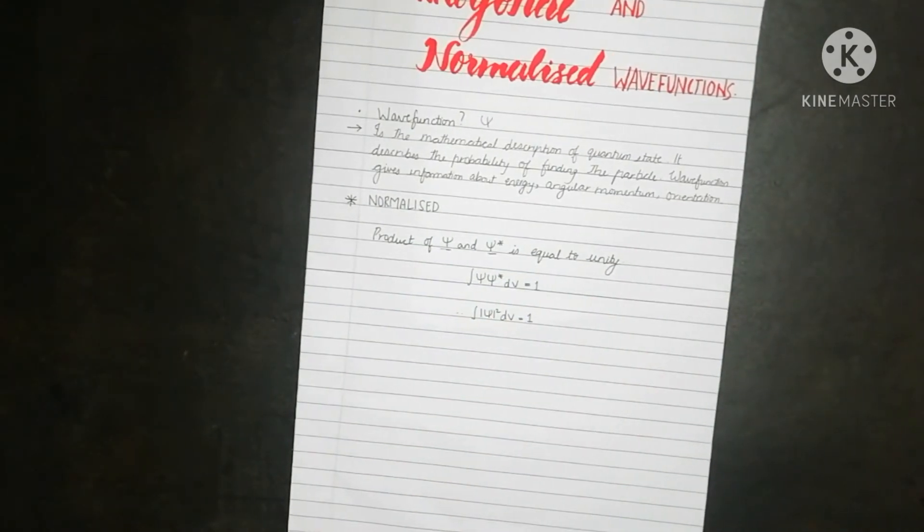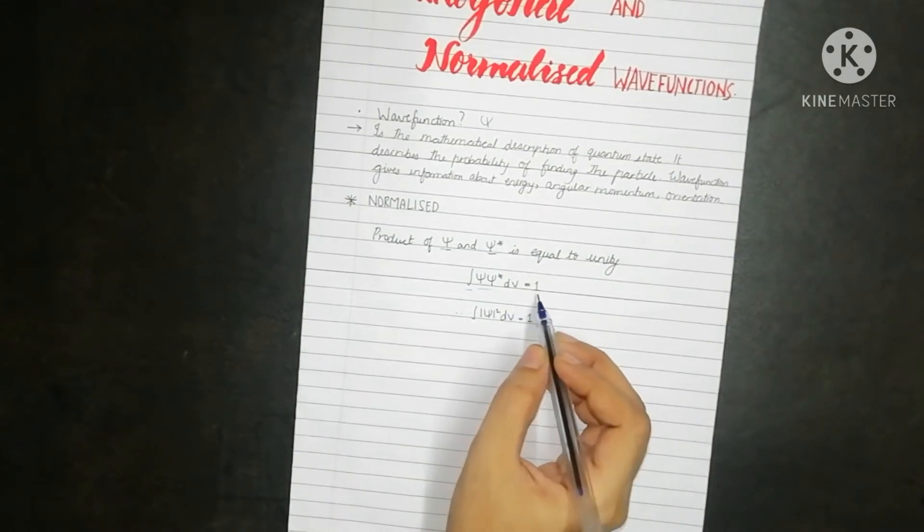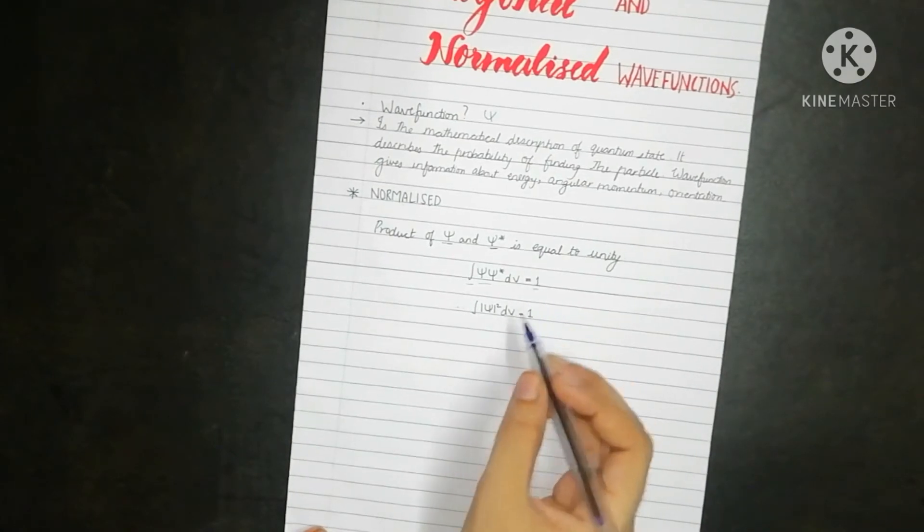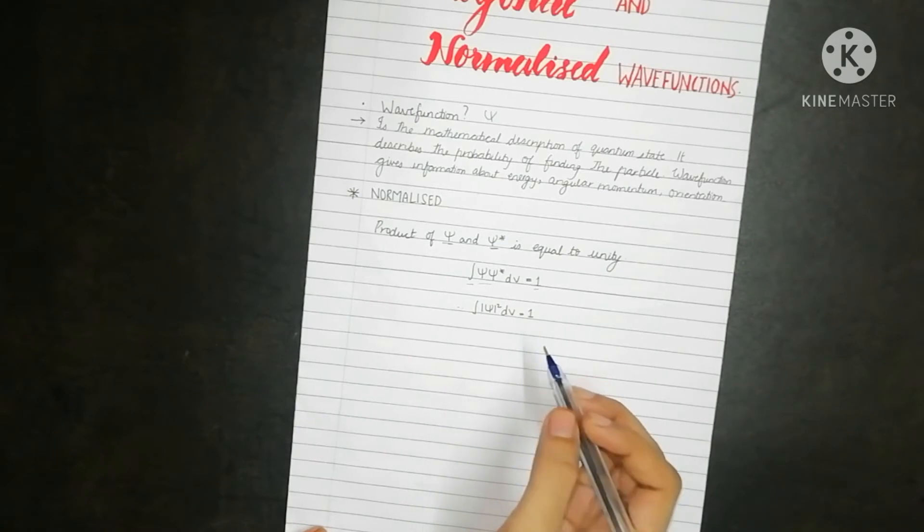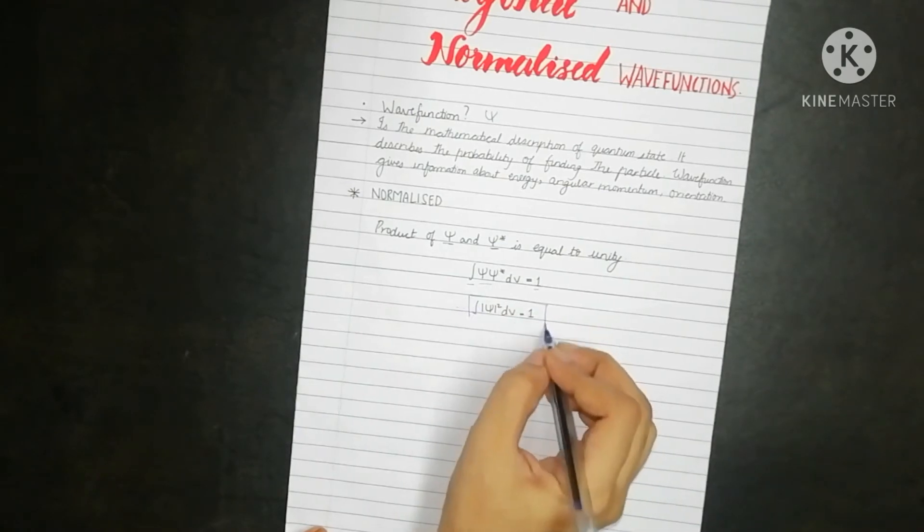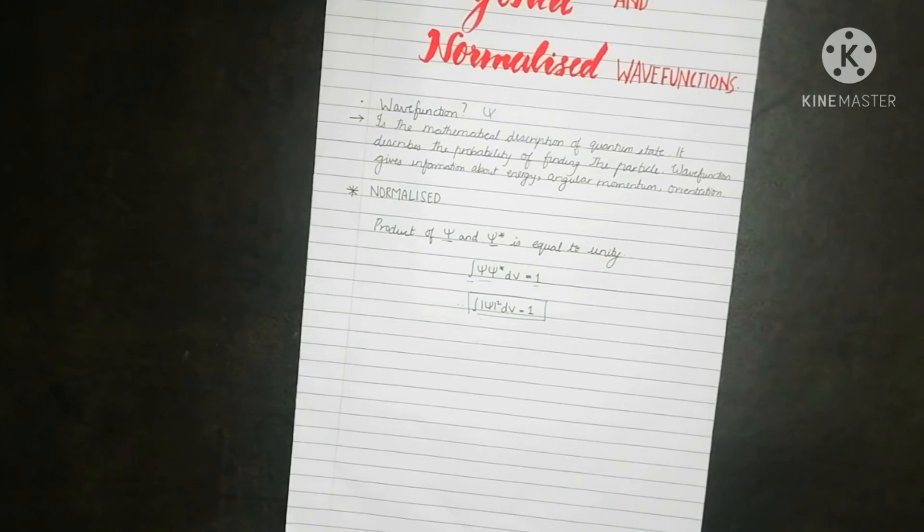This could be represented as integration of psi into psi star dv is equal to 1. This could also be written as integration of mod of psi square dv is equal to 1. This is the necessary condition for the wave function to be called as a normalized wave function.